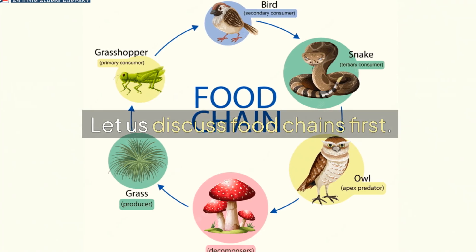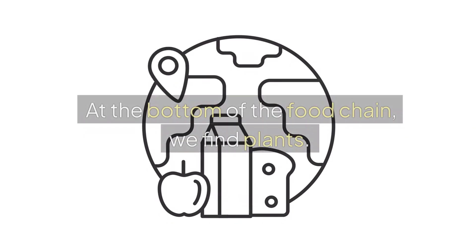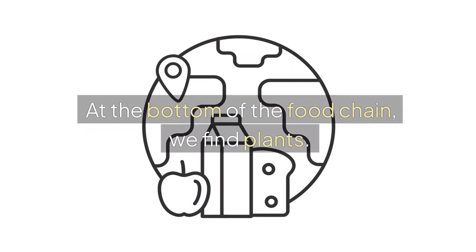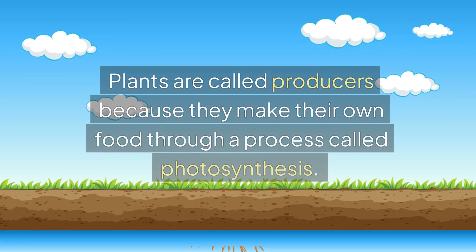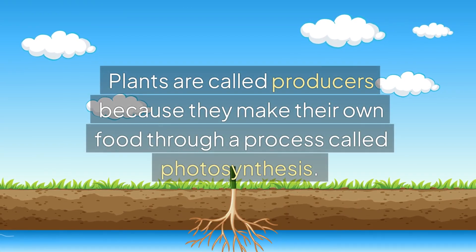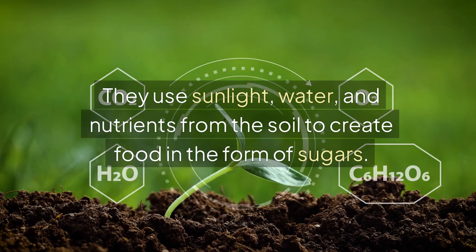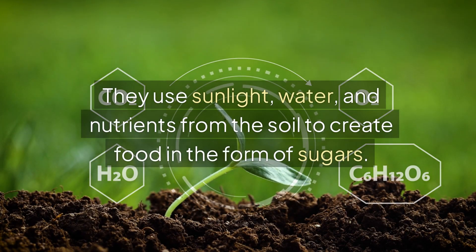Let us discuss food chains first. At the bottom of the food chain, we find plants. Plants are called producers because they make their own food through a process called photosynthesis. They use sunlight, water, and nutrients from the soil to create food in the form of sugars.